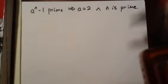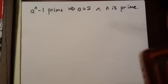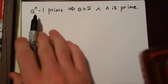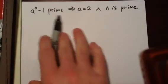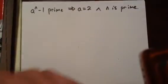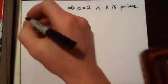Let's prove this result that's sort of related to Mersenne primes. It says that if the quantity a to the n minus 1 is prime, then a is 2 and n is prime. So let's go ahead and prove this.